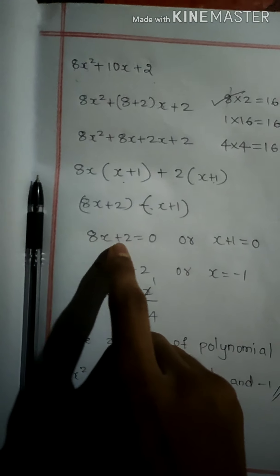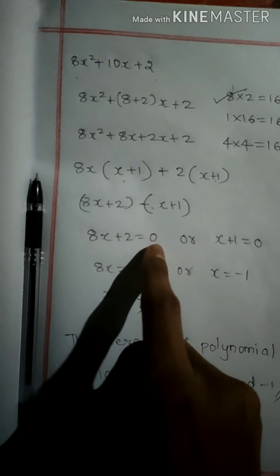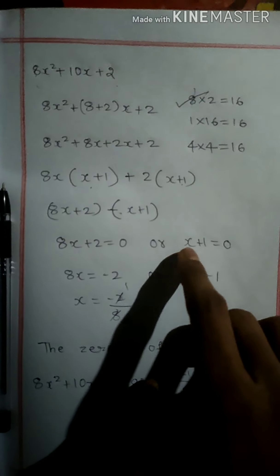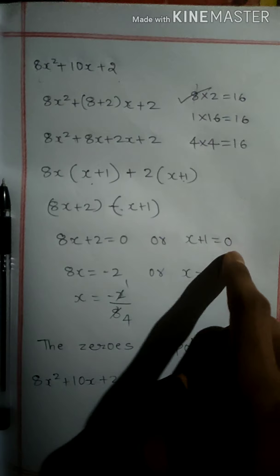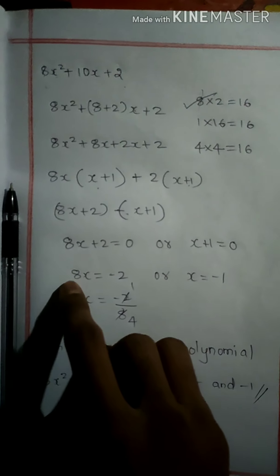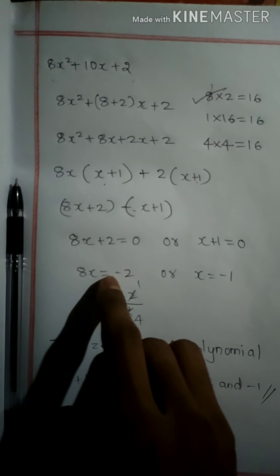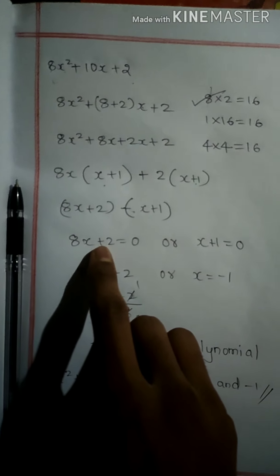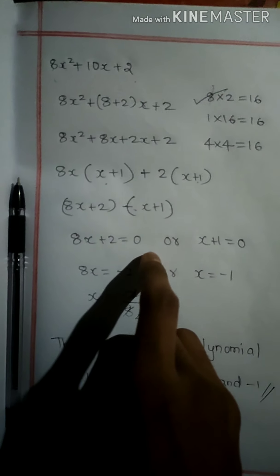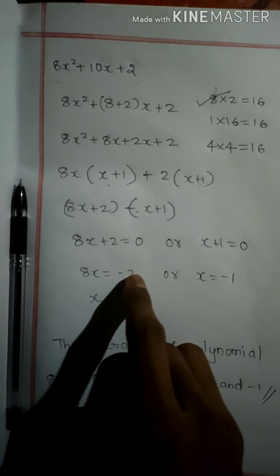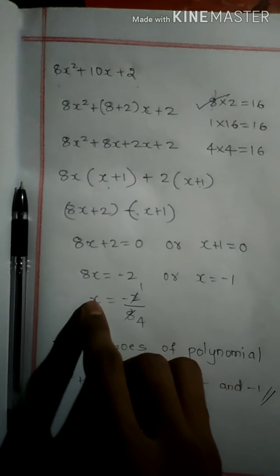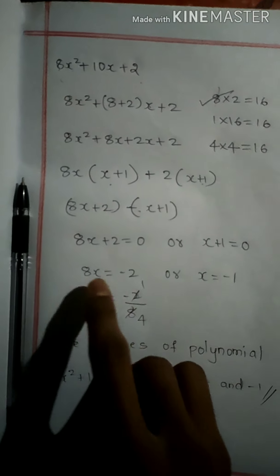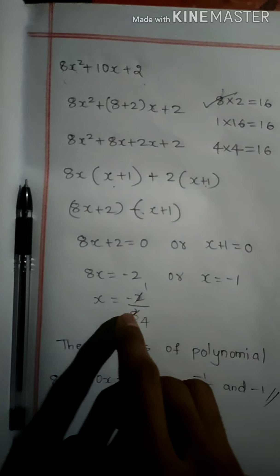Setting each factor to zero: 8x plus 2 equals 0 and x plus 1 equals 0. From the first, x equals minus 2 by 8, which simplifies to minus 1 by 4. From the second, x equals minus 1.